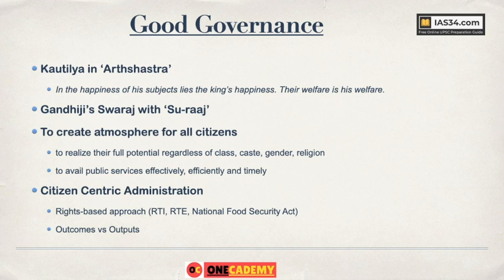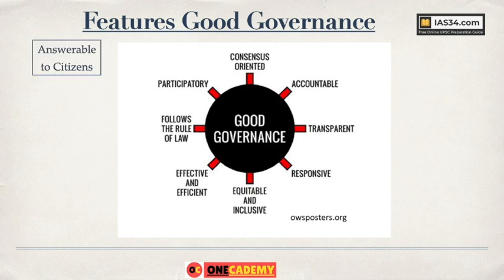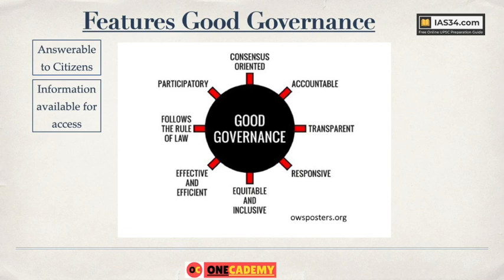The eight characteristics of good governance are: consensus oriented, accountable, transparent, responsive, equitable and inclusive, effective and efficient, follows the rule of law, and participatory. Accountable means being answerable to citizens — citizens can ask what you have done with a project and why a problem is not being solved. Transparent means information is available and accessible to citizens unless it is very important to keep it secret — it should be available publicly.